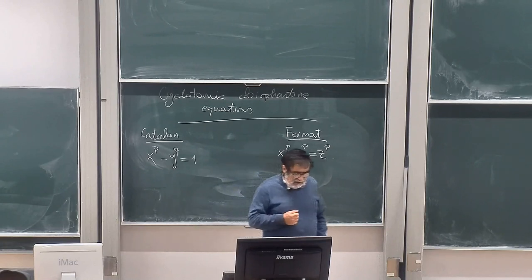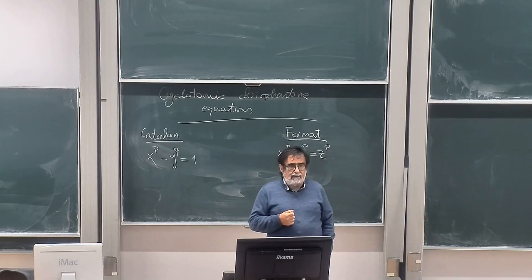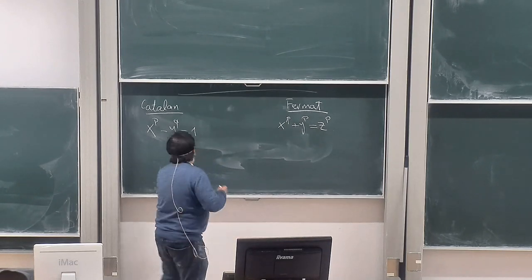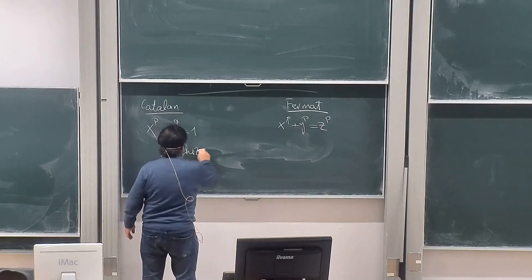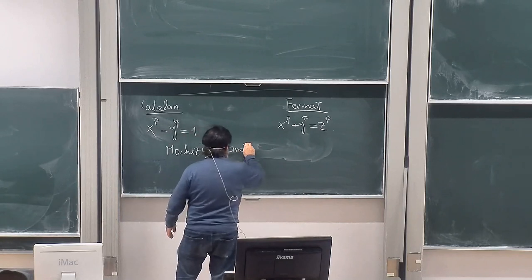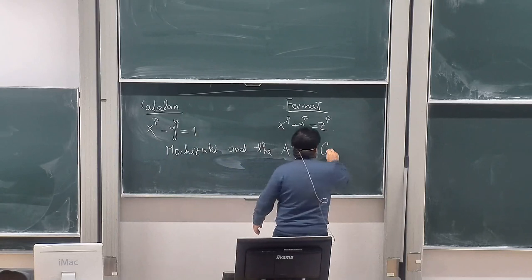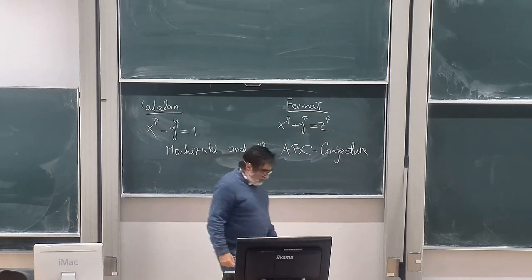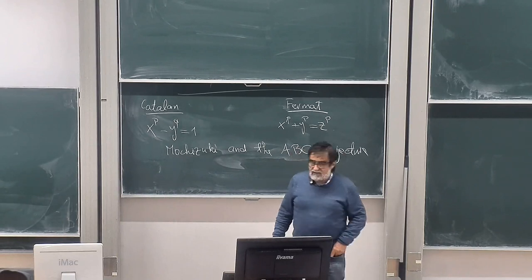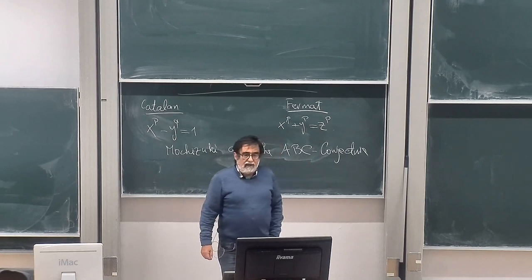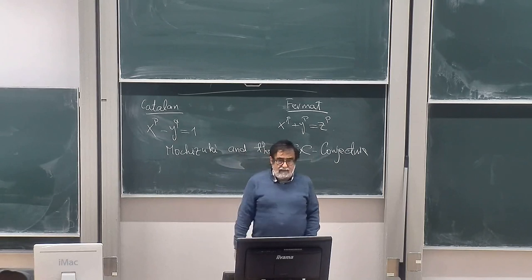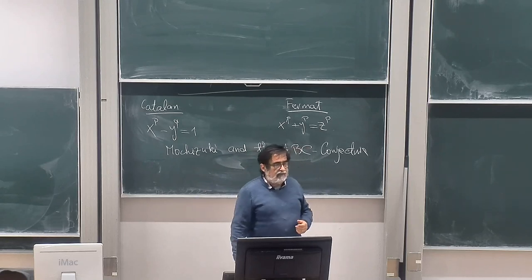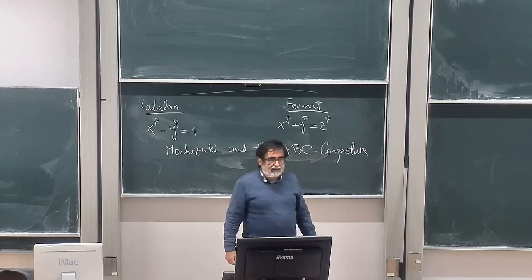There is a very recent connection for the talk I'm going to give today, and it has to do with Mochizuki and the ABC conjecture. I don't know how much each of you has heard about the inter-universal Teichmüller theory of Mochizuki. It is a new development of the last decade, which belongs to what people like to call a controversial development - for whatever reason, when people don't yet understand something it becomes controversial.